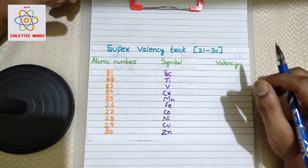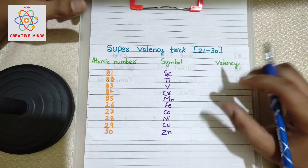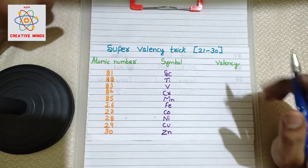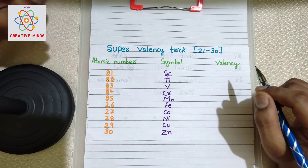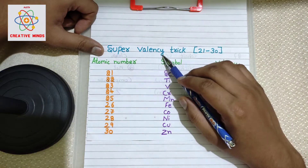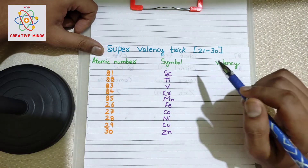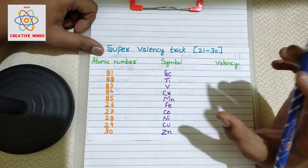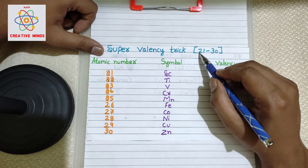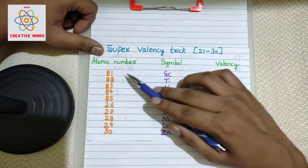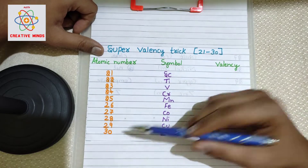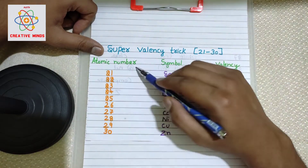Hello students, welcome once again to this wonderful series where I am going to teach you some amazing and cool shortcut tricks to remember the valences. In this video we are going to learn shortcut tricks to remember the valences of atomic number 21 to atomic number 30 elements.